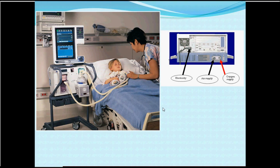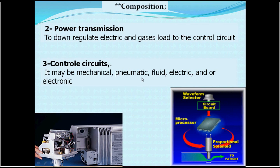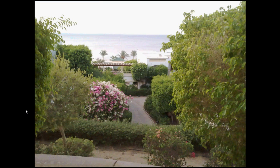The inputs for the ventilator are electricity, air supply, and oxygen supply, in order to deliver breath to the patient. The composition includes a power input — the electricity socket — and two other sockets with different colors: one for oxygen and one for air. These are delivered to the ventilator, supplied at high voltage or high pressures, and power transmission units down-regulate the electric and gas load to match the requirements of the control circuits, which may be electric, electronic, pneumatic, or fluidic.